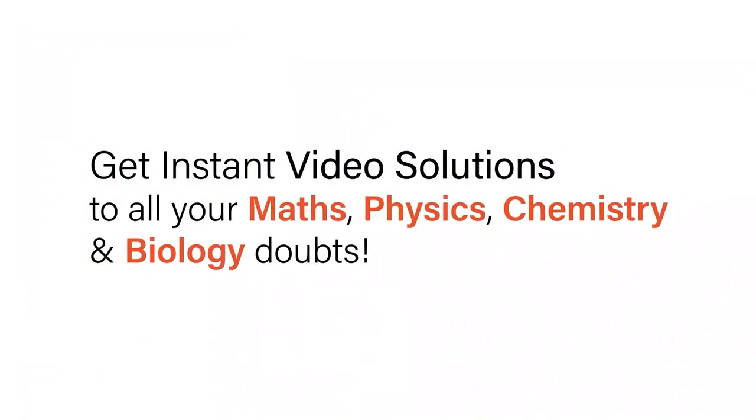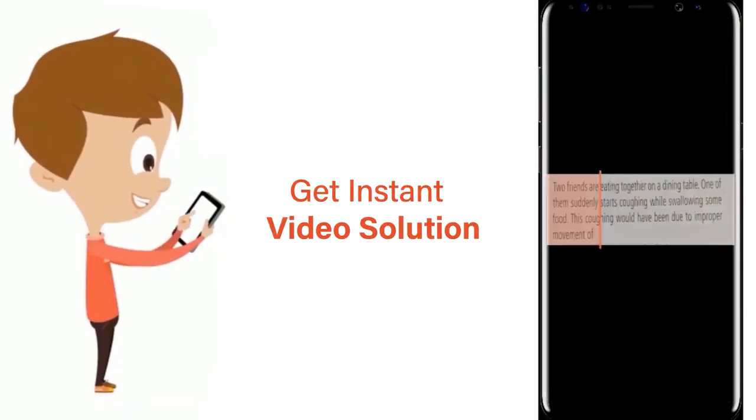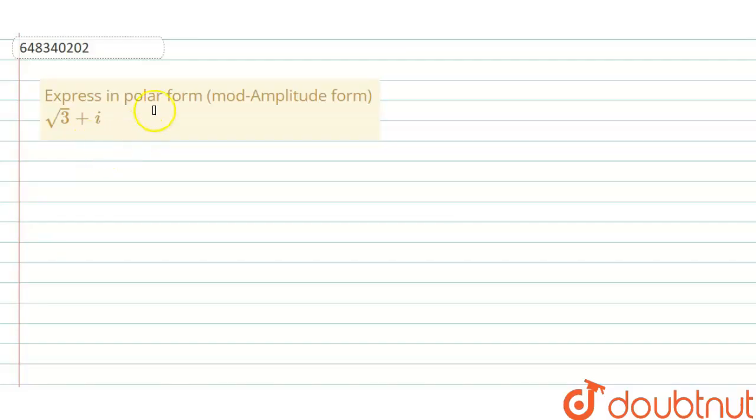With Doubtnet, get instant video solutions to all your math, physics, chemistry, and biology doubts. Just click the image of the question, crop the question, and get instant video solution. Download Doubtnet app today. Hello everyone, here is our question which says express in polar form (modulus-amplitude form) √3 + i. So we have to find the polar form.